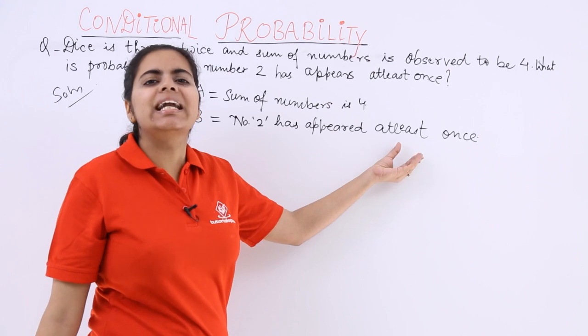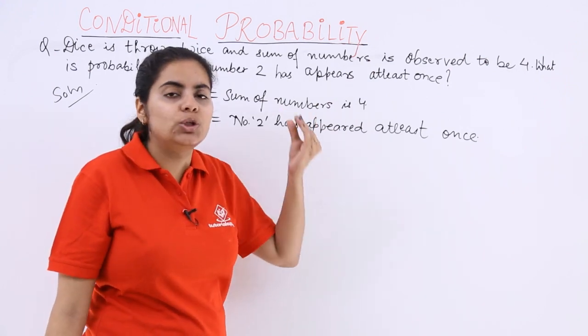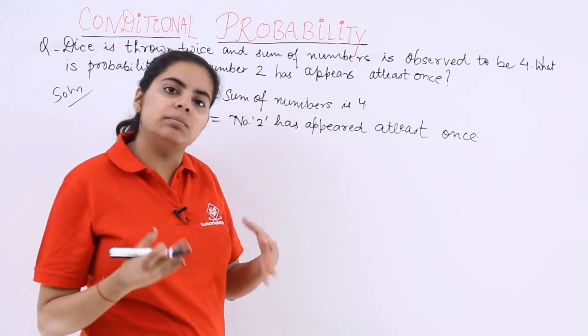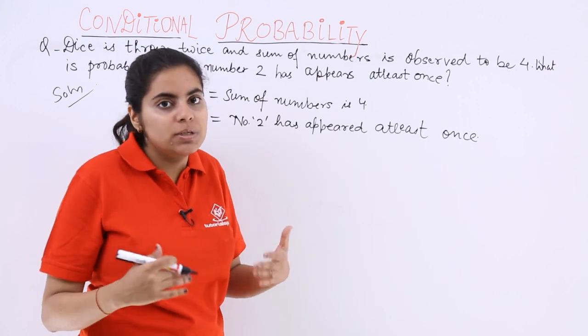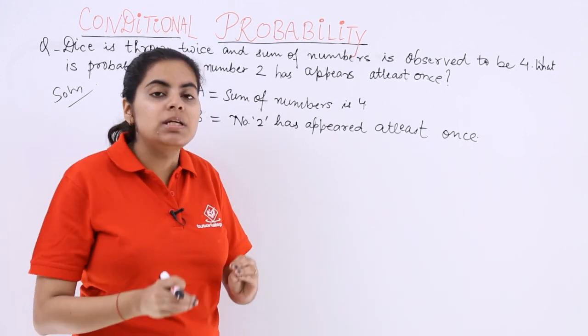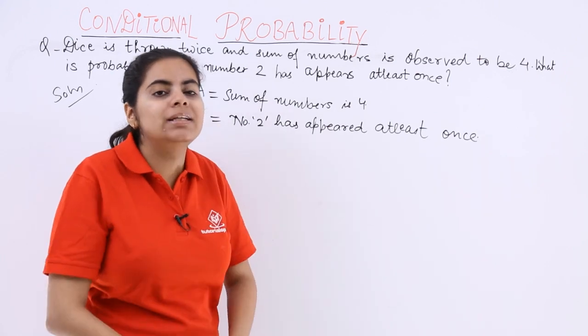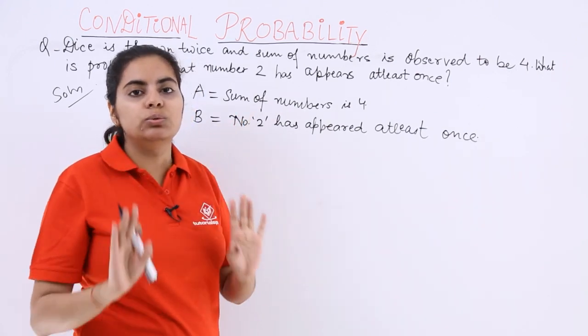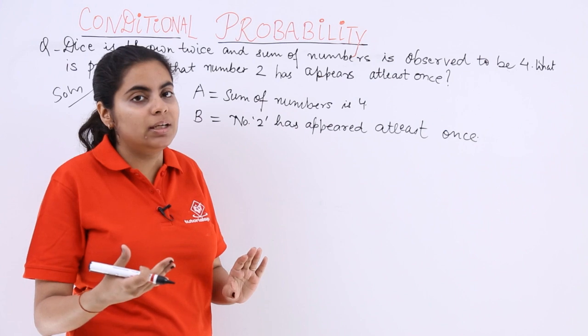Now what does this word at least mean? At least means that two has appeared one time. More than one which means two times in this case also possible. At least means minimum one time the number two has occurred. It can be more than one time also.